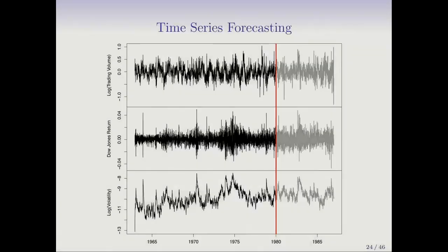We're going to use an RNN to address a different kind of sequence problem: time series forecasting. What you're seeing here is three time series — financial time series covering the period 1960 to 1990. These are daily time series, meaning trading days, so five trading days a week.